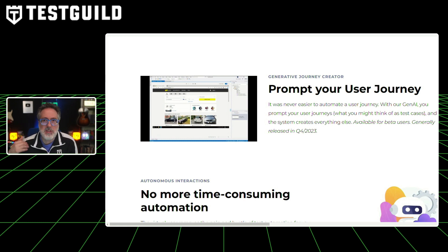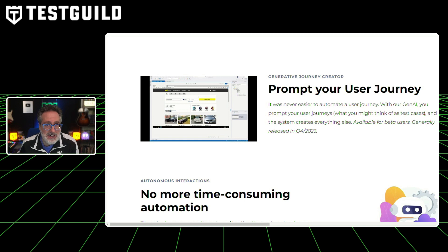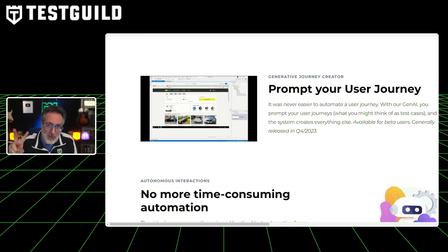It's a quick demonstration on how AI seamlessly identifies and selects elements, even adapting to new pages it hasn't encountered before. You can dive into the magic with this two-minute explainer video. Check it out and let me know your thoughts in the first comment down below.